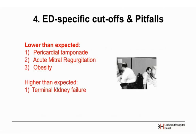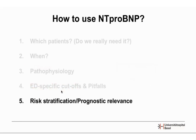Potential pitfalls: natriuretic peptides can be lower than expected in pericardial tamponade, acute mitral regurgitation, and obesity. In obese patients with NT-proBNP in the grey zone, heart failure is still most likely the cause. Conversely, NT-proBNP can be higher than expected in terminal kidney disease, where values will be elevated beyond what heart failure alone would explain.